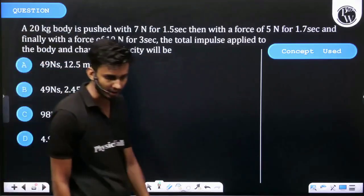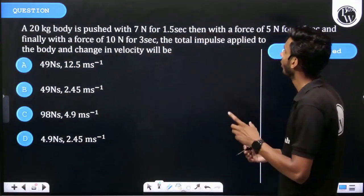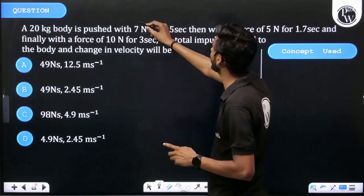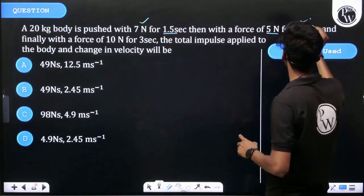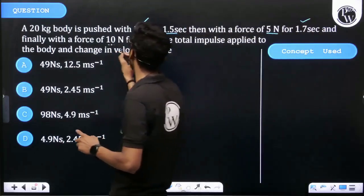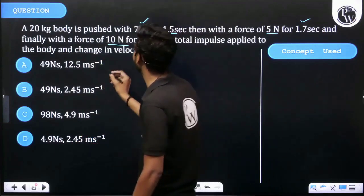Okay, let's see the question. A 20 kg body is pushed with 7 N for 1.5 seconds, then with a force of 5 N for 1.7 seconds, and finally with a force of 10 N for 3 seconds. The total impulse applied to the body and change in velocity will be?